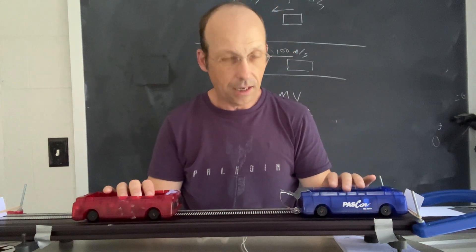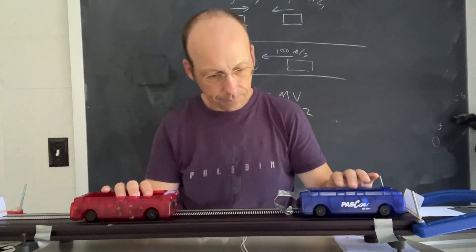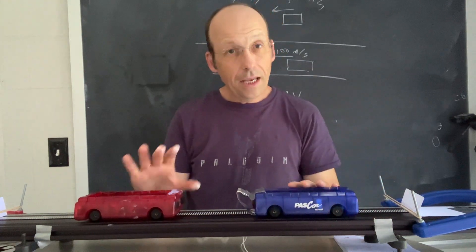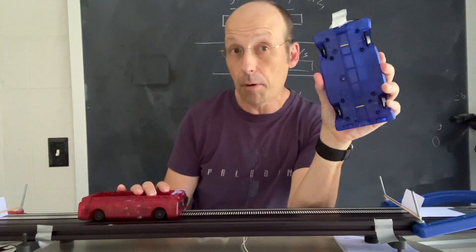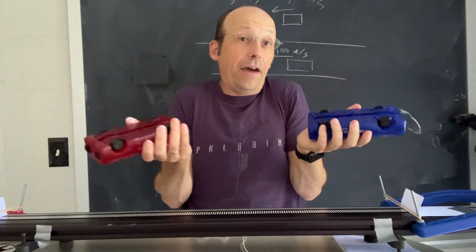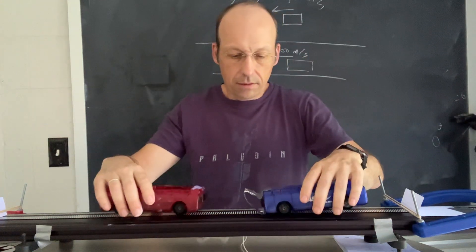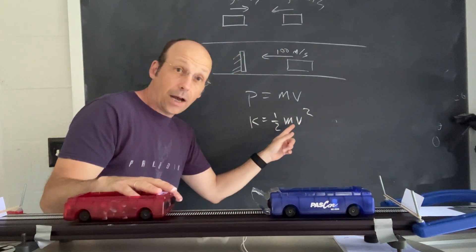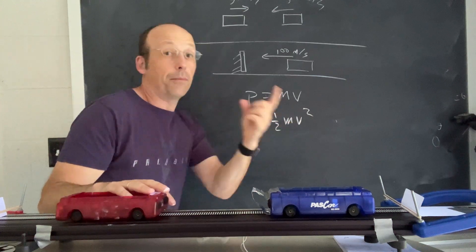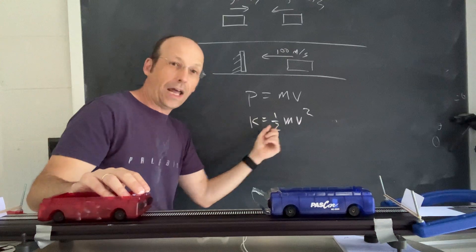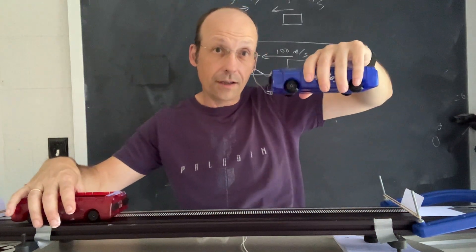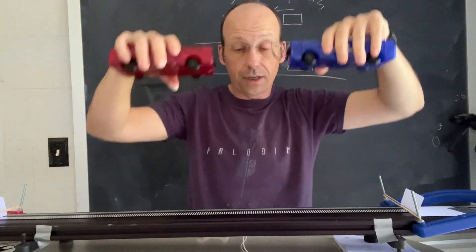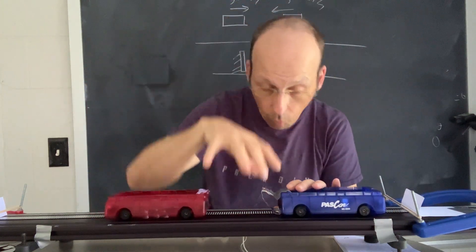Now let's switch to the case where I hold one car stationary and push the other one twice as fast. If I double the speed, I get four times as much kinetic energy. Only one car is moving, but the total kinetic energy is four times ½ — so I actually get double the kinetic energy of the system compared to both going 50. That means it's going to do more damage to the car.